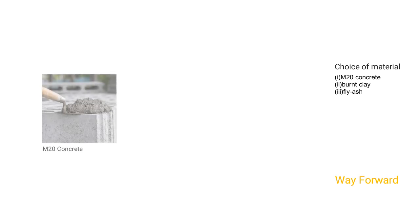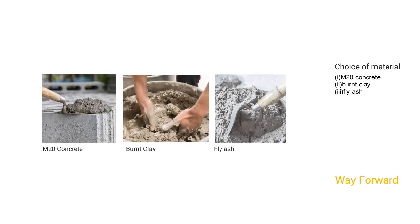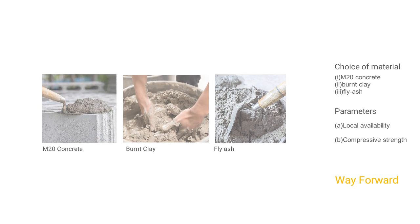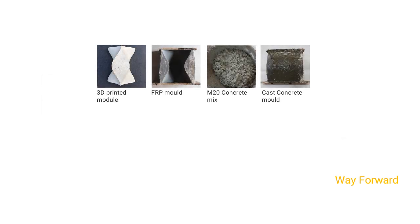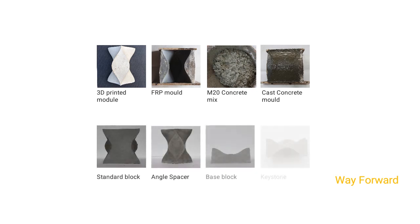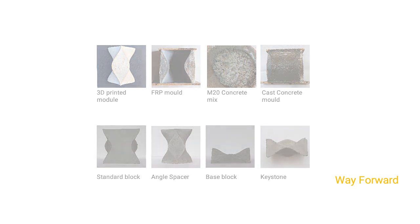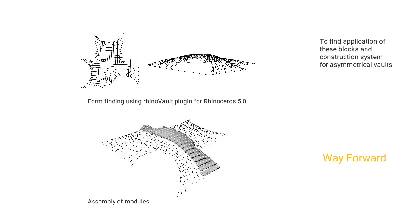Two aspects of further research are underway. First, choice of material: M20 concrete, burnt clay, and fly ash are chosen as test cases based on required compressive strength and local availability. First prototypes in M20 concrete — all four block types including standard block, angle spacer, base block, and keystone — are made, with structural testing and full-scale prototyping ongoing. Second, finding applications of these blocks for asymmetrical walls.